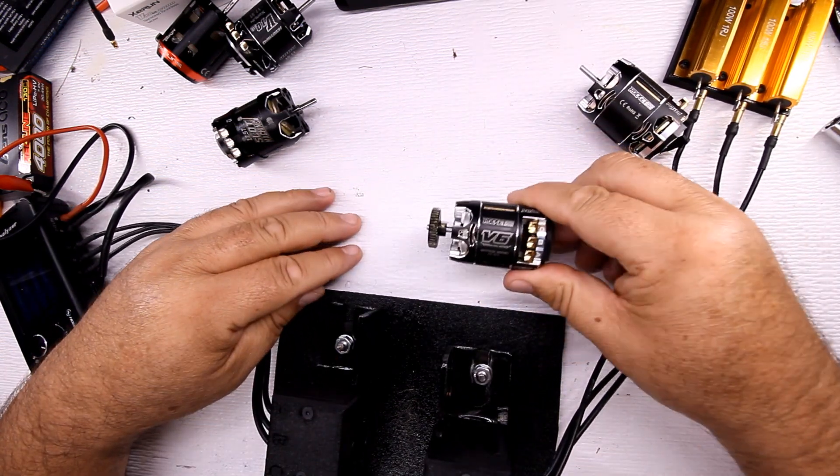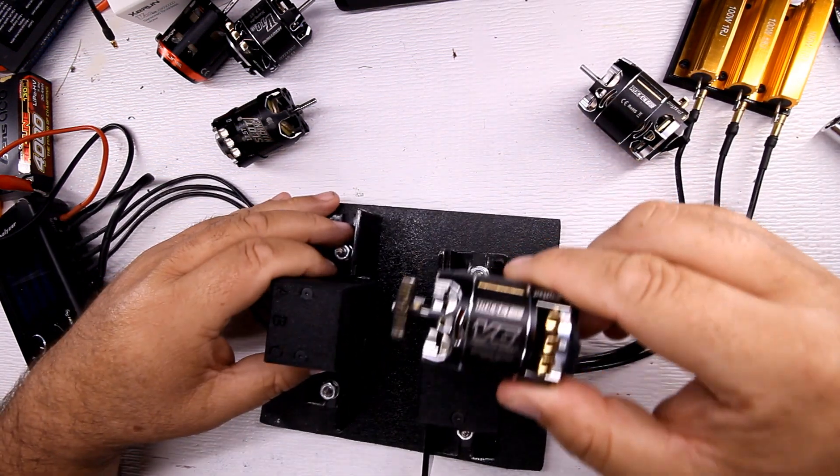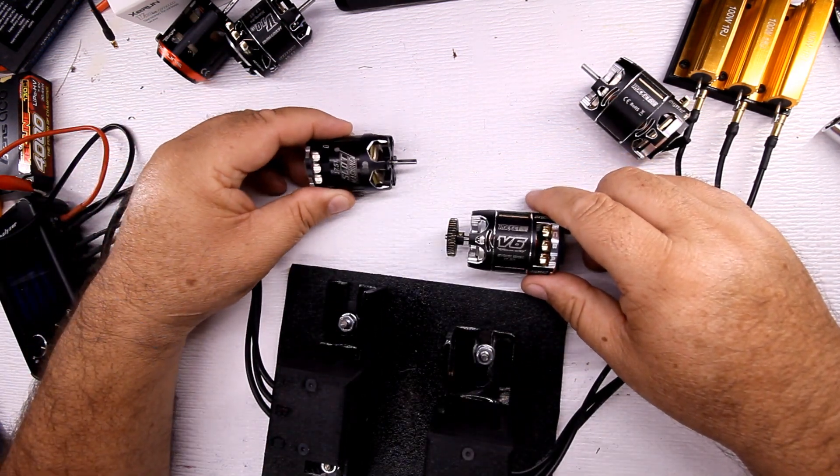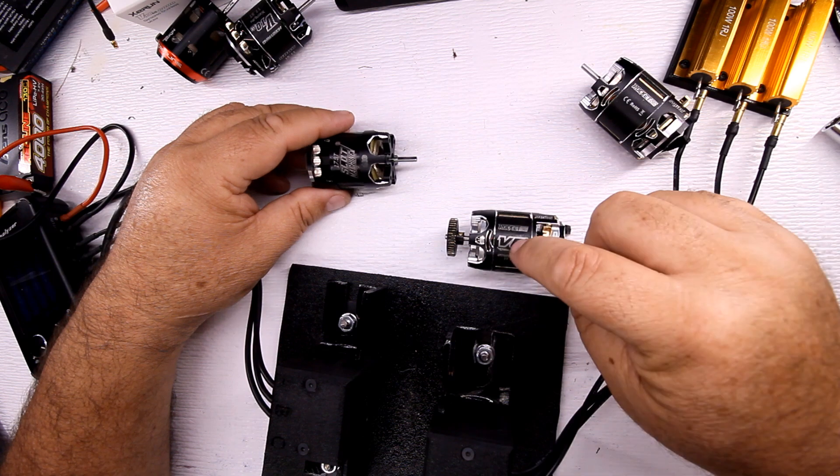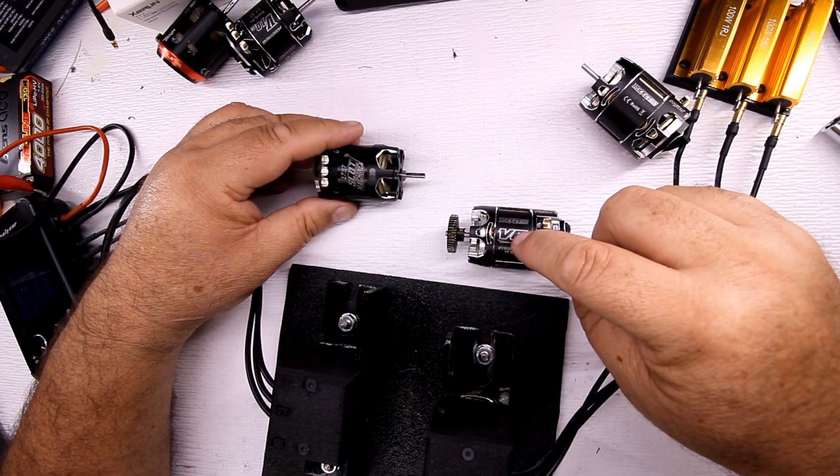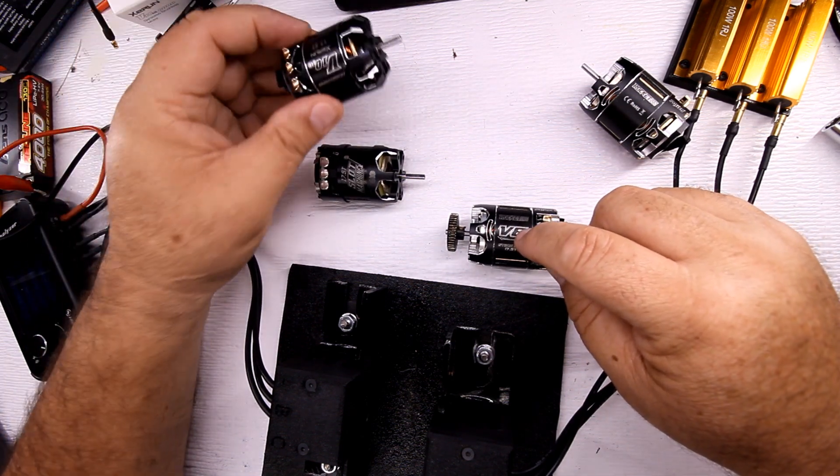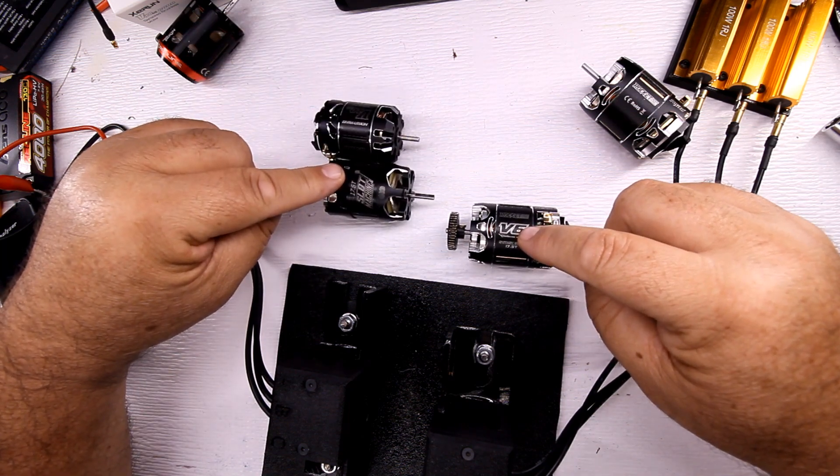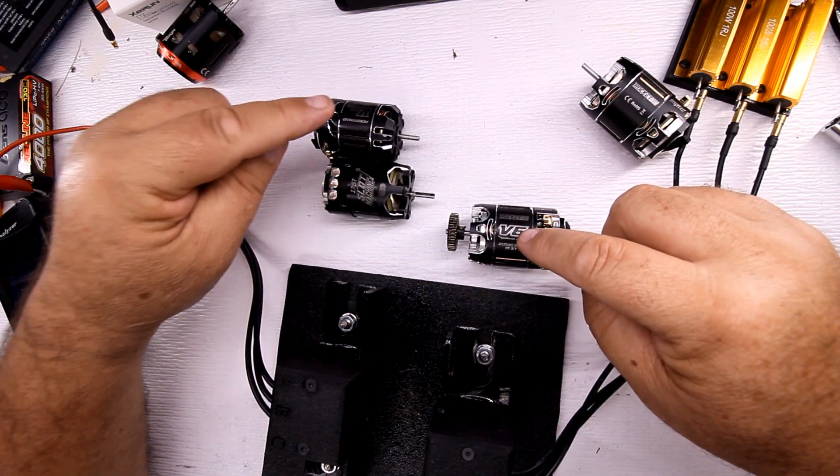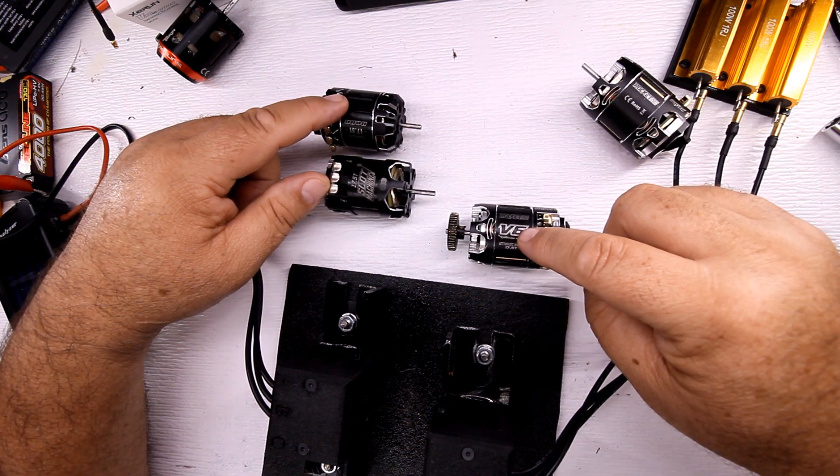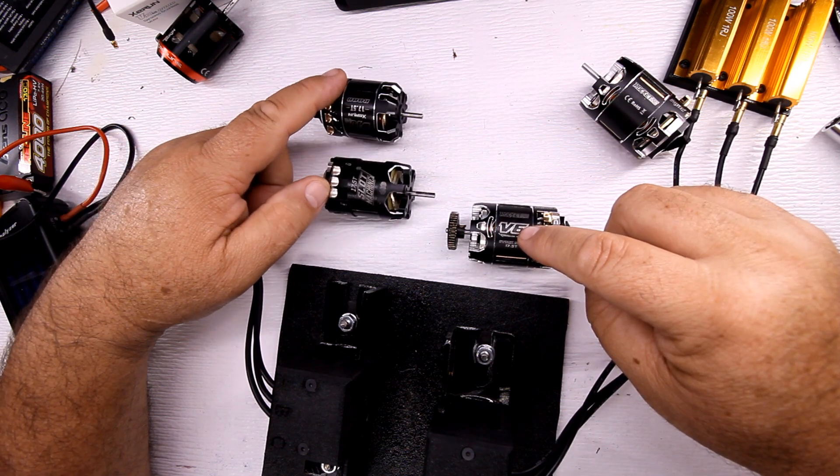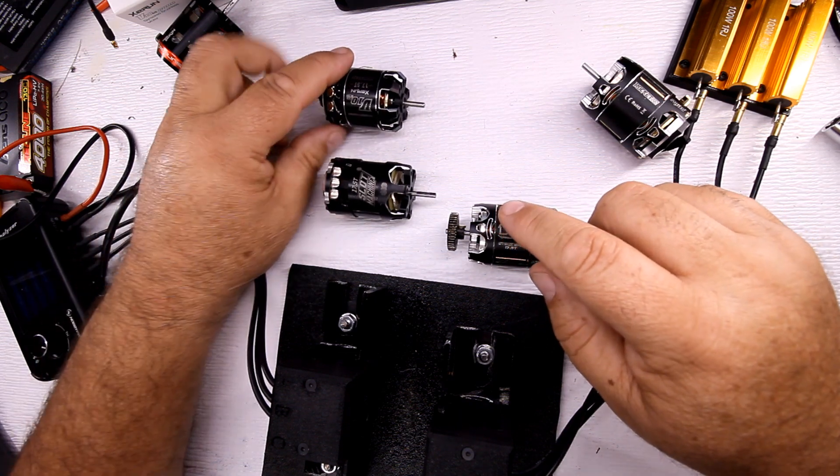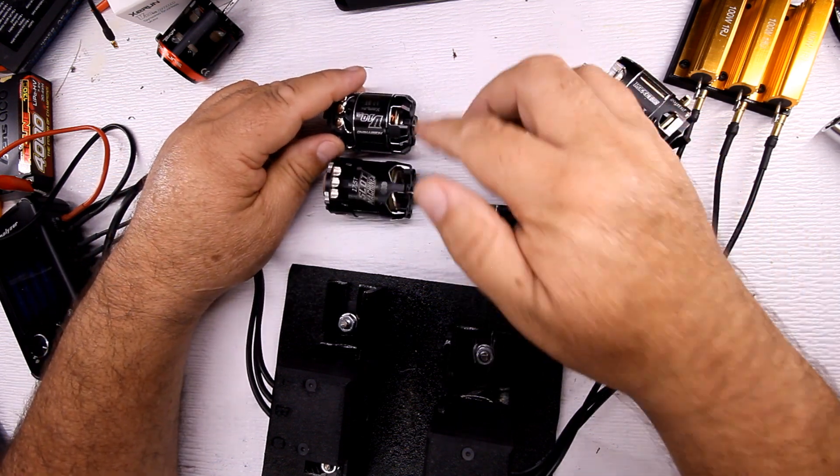So if I have the load motor on this side, I can gear this motor to spin the load motor the same speed as this motor will. So if this one right here is running 25,000 RPMs without a load, this one here is 22,000 RPMs without a load. How would they fare with a load? How would they fare if I was putting the same amount of load on each motor?